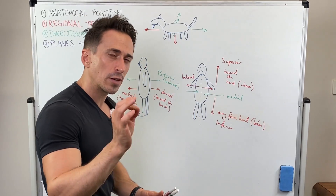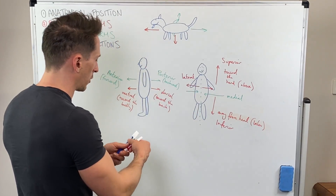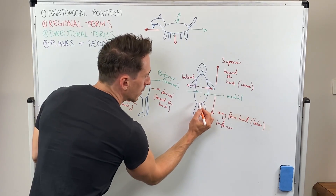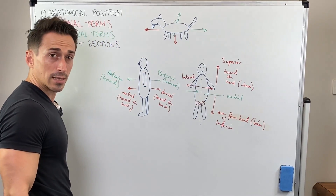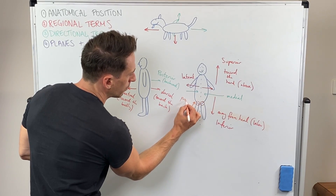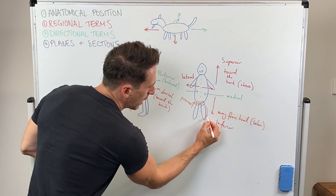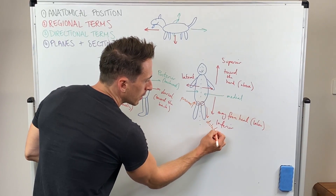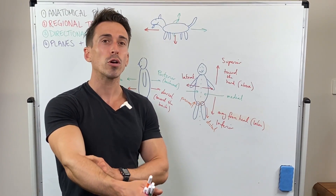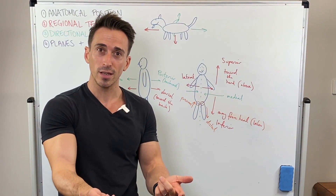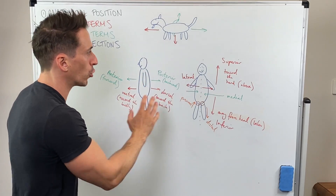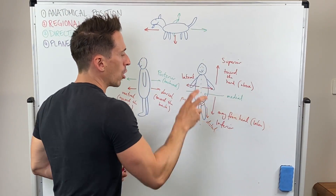The last directional terms relate specifically to limbs or structures that have a beginning and an end. Limbs have a site of attachment — closer to the site of attachment we use the term proximal, and further away from the site of attachment we say distal. For example, the elbow compared to the wrist — the elbow is proximal, closer to the site of attachment. The wrist compared to the elbow is distal, further away from the site of attachment.